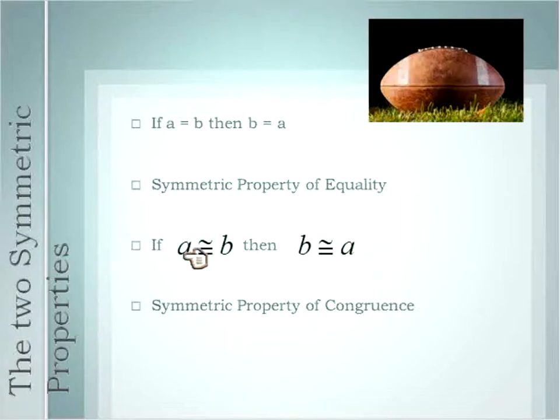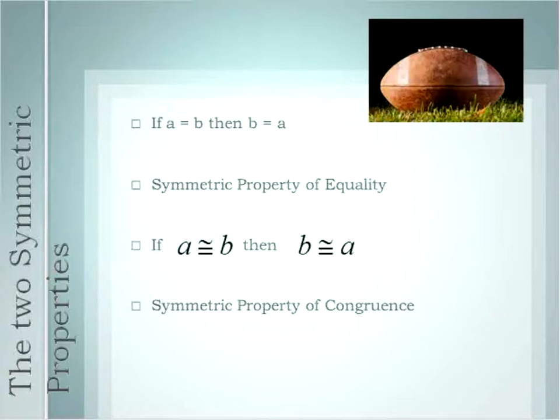That's right. We're going to stick in congruent signs and call it the property of congruence. Symmetric property of congruence when you have the congruency sign, A equals B, B equals A. Symmetric property of equality if you have A equals B, B equals A.